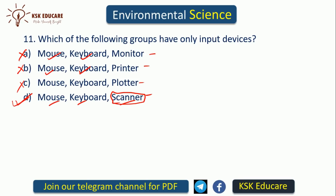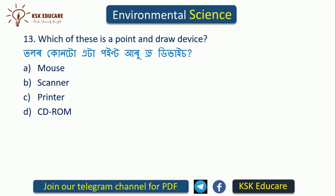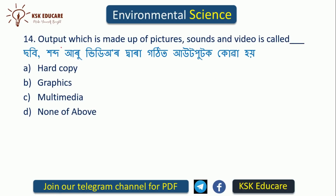Which of the following groups have only input devices? The correct option includes mouse and keyboard as input devices. The computer monitor is an output device. Which of these is a point-and-draw device? Obviously, the mouse is a point-and-draw device — option A is the right answer. Output made up of pictures, sounds, and video is called multimedia output.